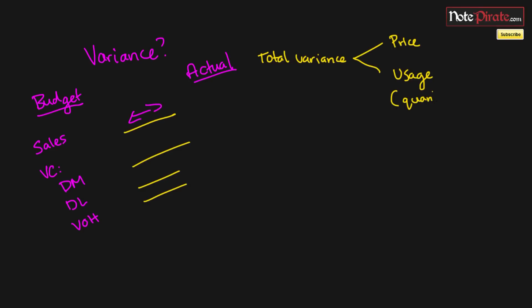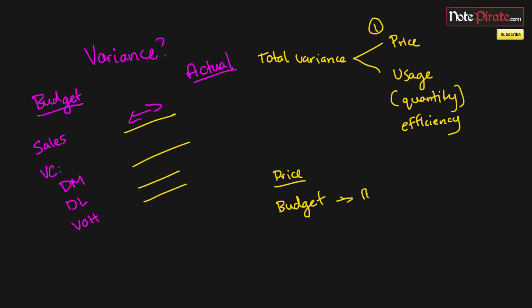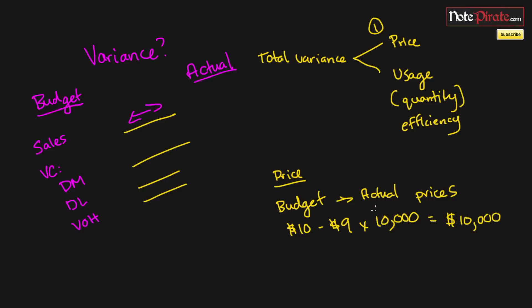The usage variance is sometimes also called the quantity variance or the efficiency variance. The price variance is simply the difference between the budgeted and the actual prices. For example, if our prices were budgeted at ten dollars and actuals were nine dollars, that's a one dollar difference. If we sold ten thousand units, that's a ten thousand dollar unfavorable variance, since we sold each unit at less than the budgeted amount.